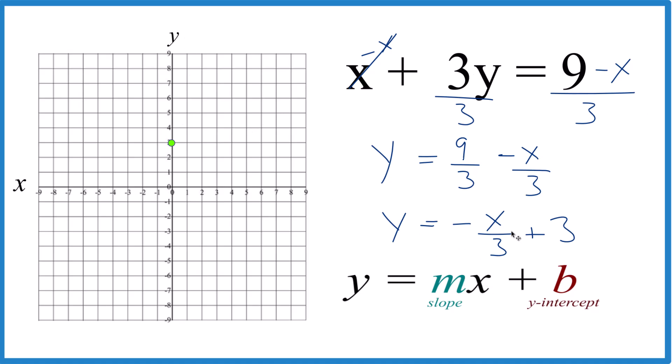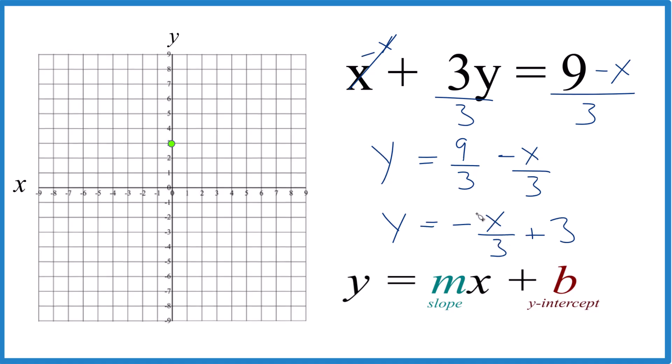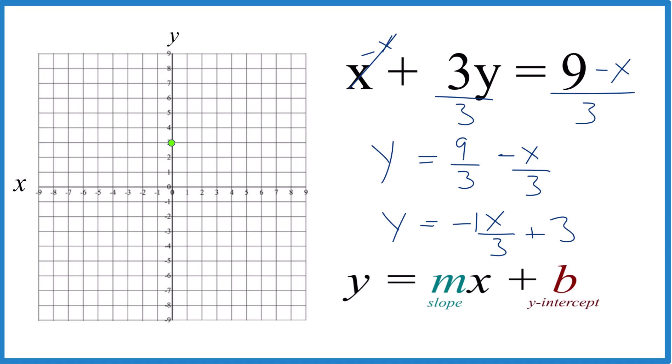Then for the slope, we have negative x over 3. Let's call it negative 1x because this is rise over run. So we go to our y-axis here. Instead of rising 1 because it's negative 1, if it was just 1, we'd rise 1, but it's negative. So let's go down and then over 1, 2, 3.